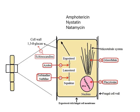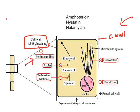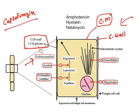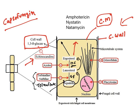The fungal cell wall is made up of chitin and 1,3-beta-glucan; it can be damaged by the echinocandin class — caspofungin, anidulafungin, micafungin — all ending in '-fungin', causing cell death. The cell membrane in fungi is made up of ergosterol, synthesized from squalene. Squalene is converted to lanosterol by squalene epoxidase, and lanosterol is converted to ergosterol by 14-alpha-demethylase. These two enzymes are inhibited by different drug classes.